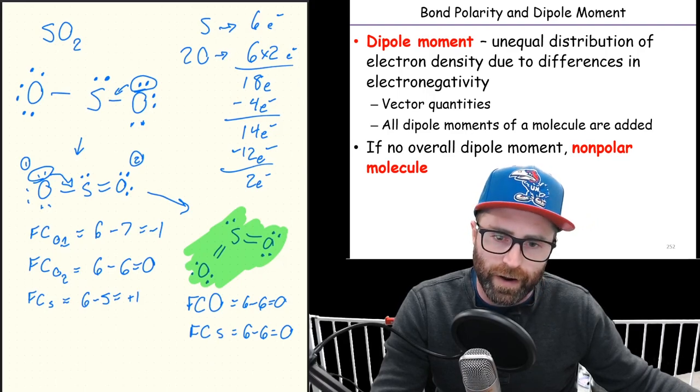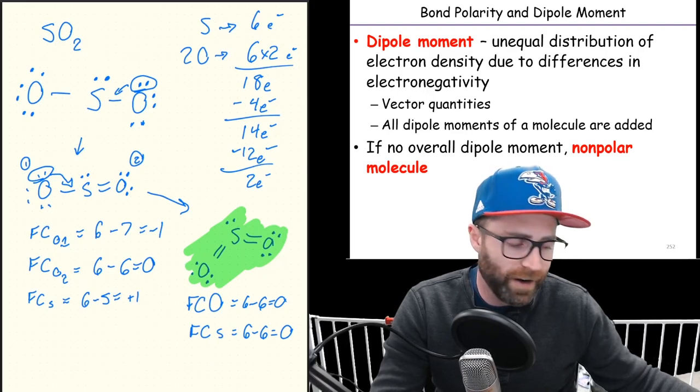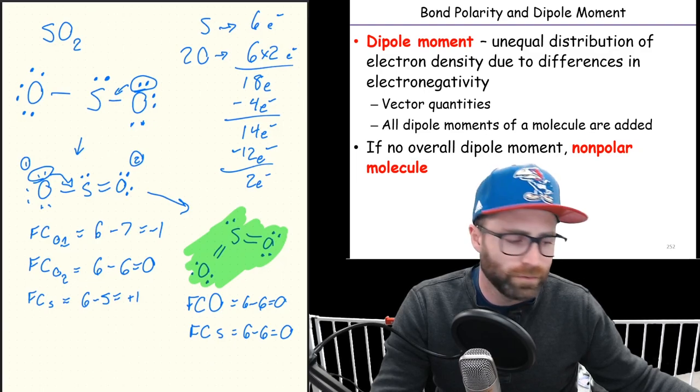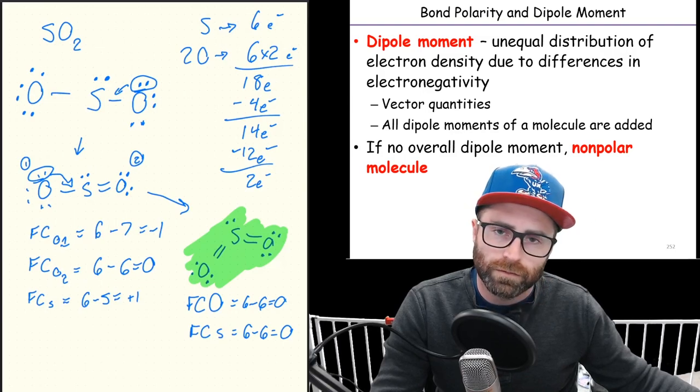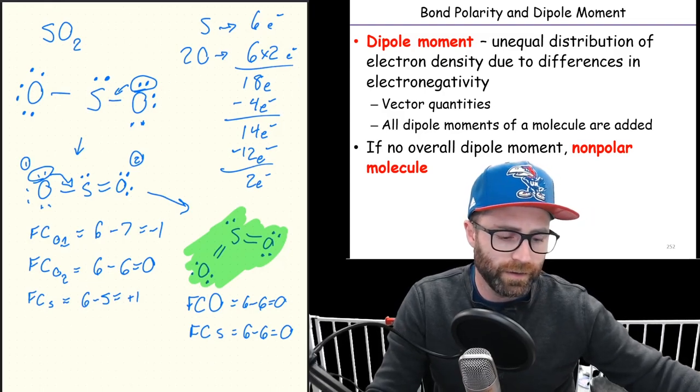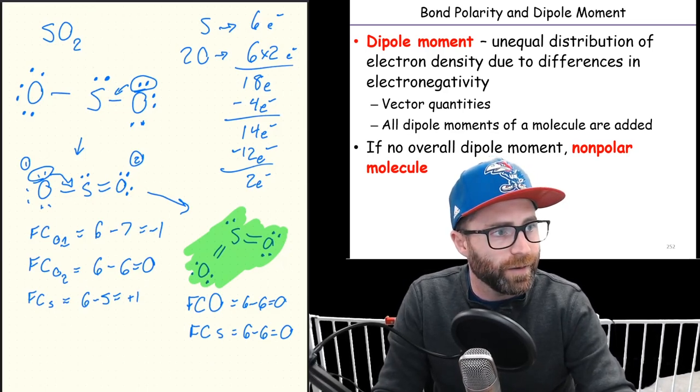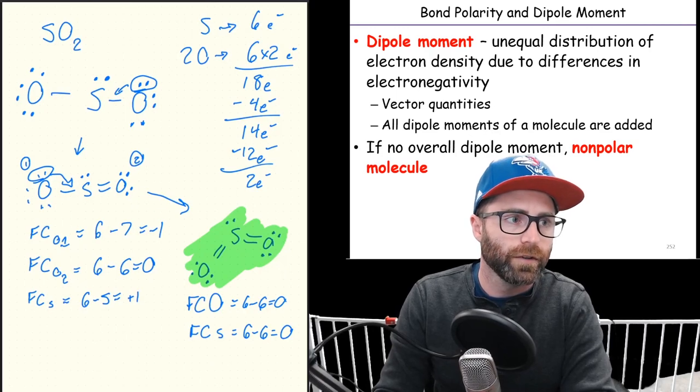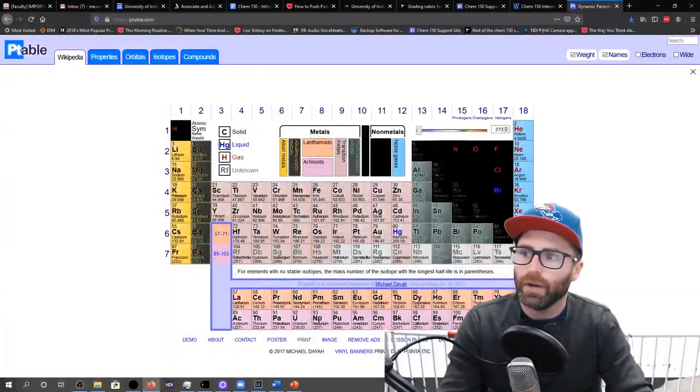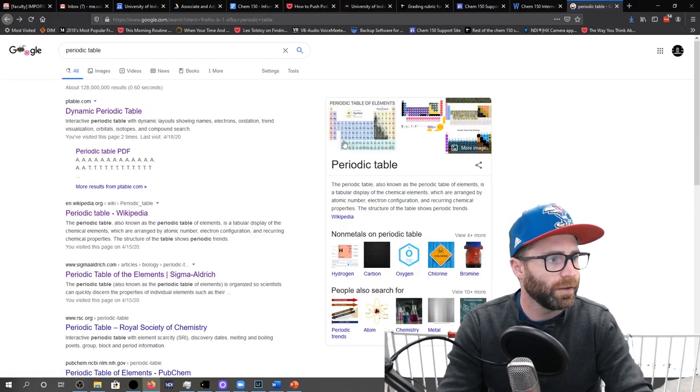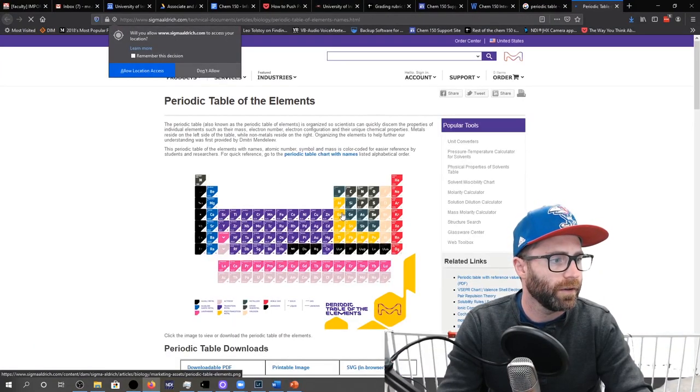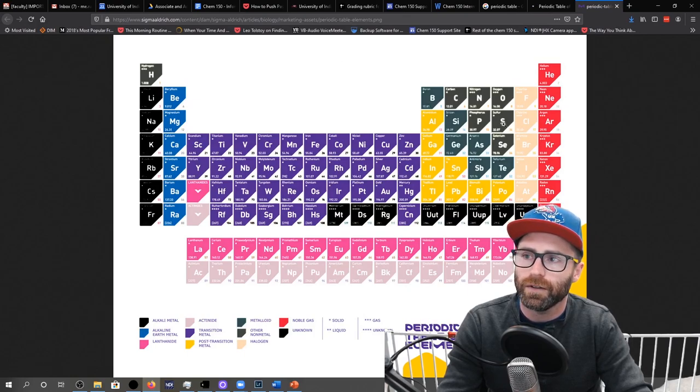Does that part make sense? Yes. How can sulfur have more than eight electrons around it? There's something special about sulfur that lets it do that though. Check out where sulfur is on your periodic table.